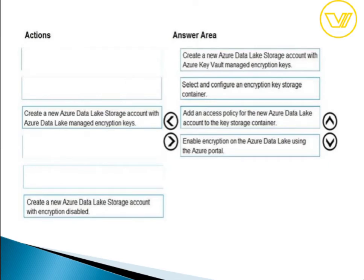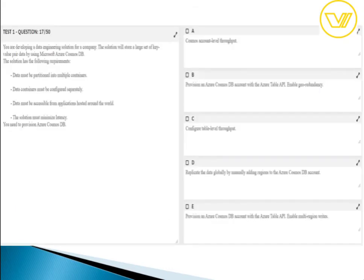For question sixteen, the steps are self-explanatory: create a new Azure Data Lake Storage account with Azure Key Vault managed encryption keys, then select and configure an encryption key storage container, add an access policy for the new Azure Data Lake account to the key storage container, then enable encryption on the Azure Data Lake Storage via the Azure portal.